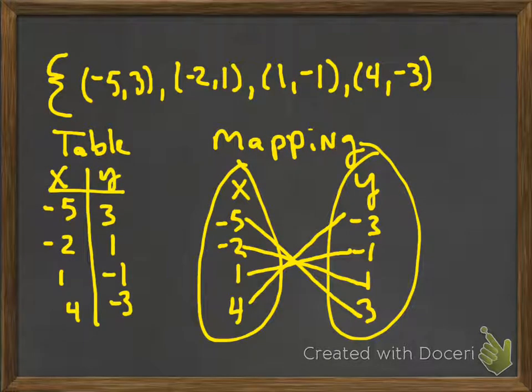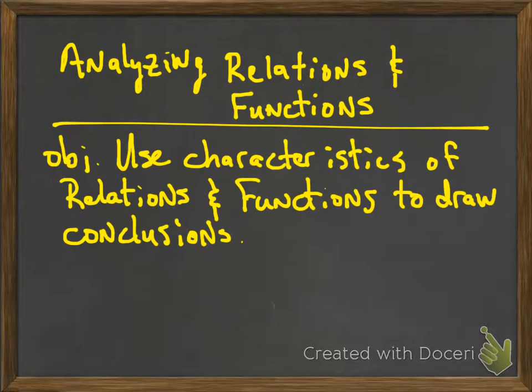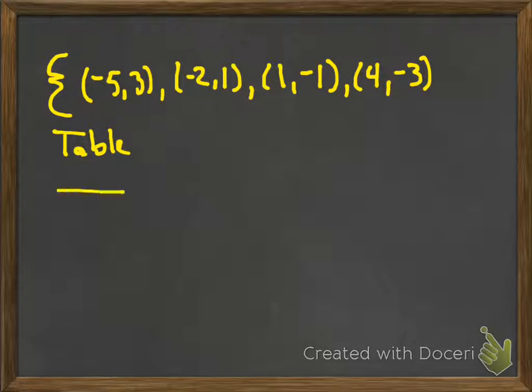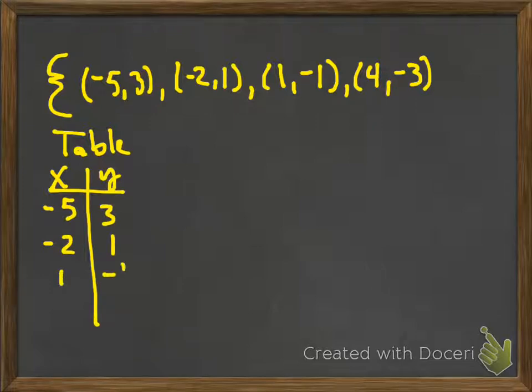All right, let's look at a data set. When I look at a set of points, I'm just calling it a data set. So here I have negative 5, 3, negative 2, 1, 1, negative 1, and 4, negative 3.